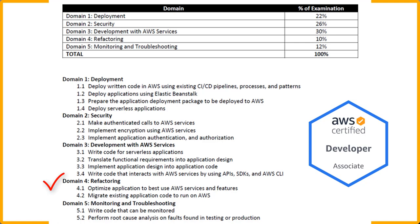Domain four is Refactoring, which is simply how to optimize applications to the best AWS services and features. This covers migrating existing application code to run on AWS — how to handle migrating your applications from on-premise to the AWS cloud, for example.